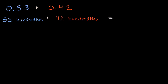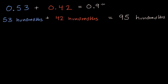Well, what's 53 plus 42? In my head, I'd say 50 plus 40 is 90, and three plus two is five. So it's going to be 95 hundredths. And if I wanted to write that as a pure number, I would write that as 0.95, which I could read as 95 hundredths, or nine-tenths and five-hundredths.